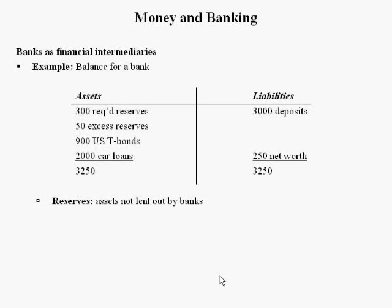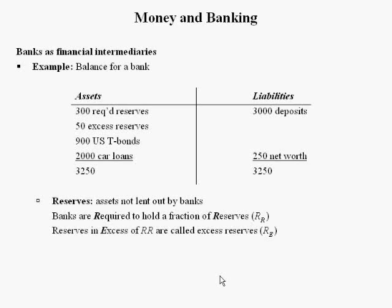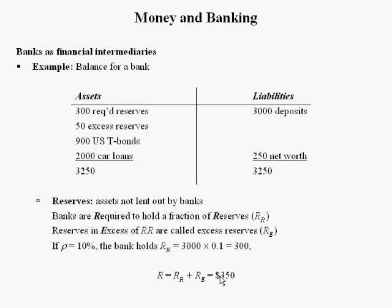Reserves are assets not lent out by banks. Banks are required to hold a fraction of reserves — we denote this quantity R-subscript-R, which represents required reserves. Reserves in excess of required reserves are called excess reserves, R-subscript-E. If the reserve requirement ratio is 10%, the bank will hold $300 by law. The total quantity of reserves equals required reserves plus excess reserves, so in this case the bank is not lending out $350.